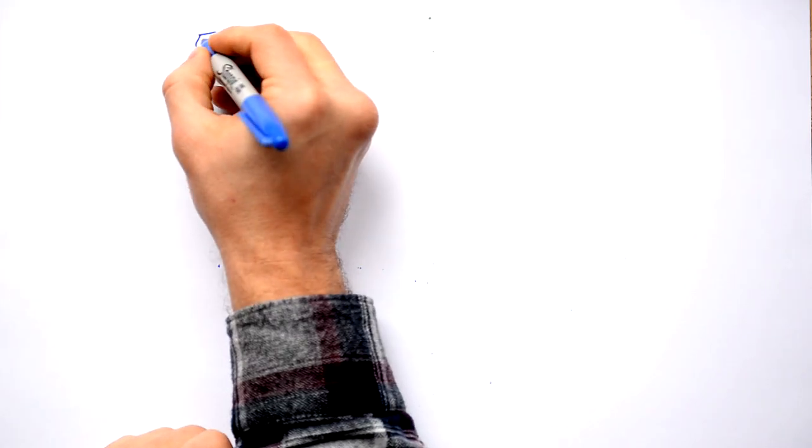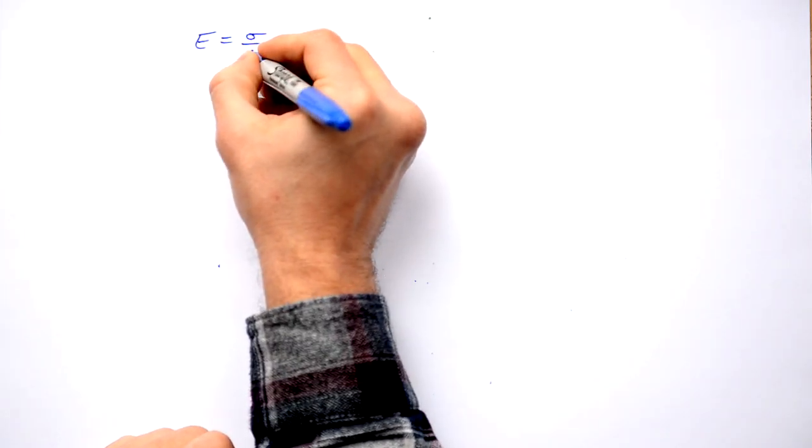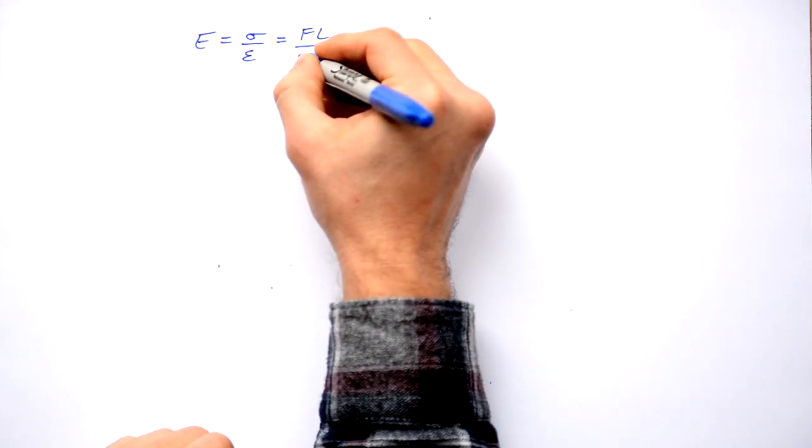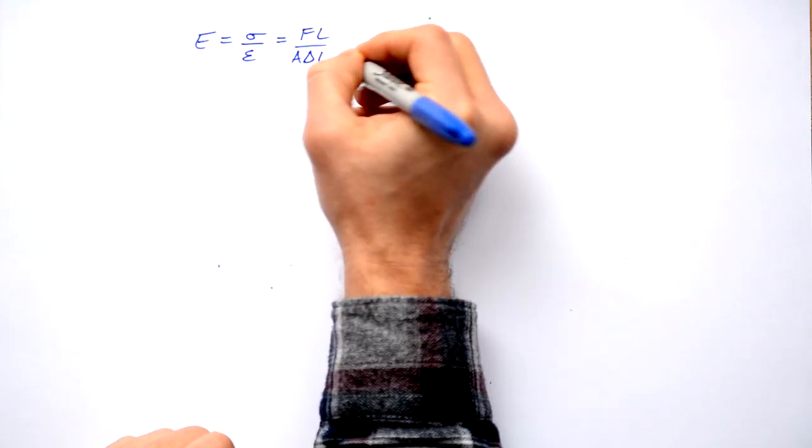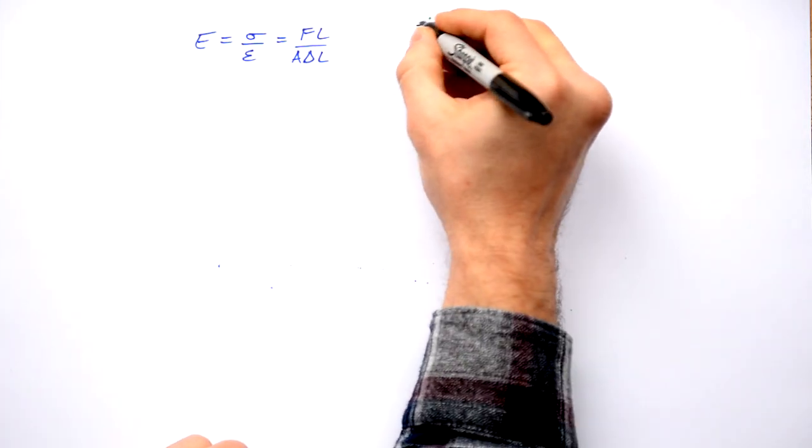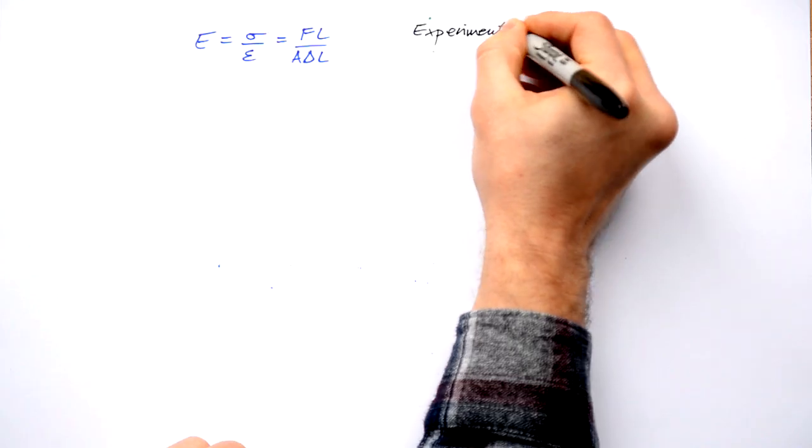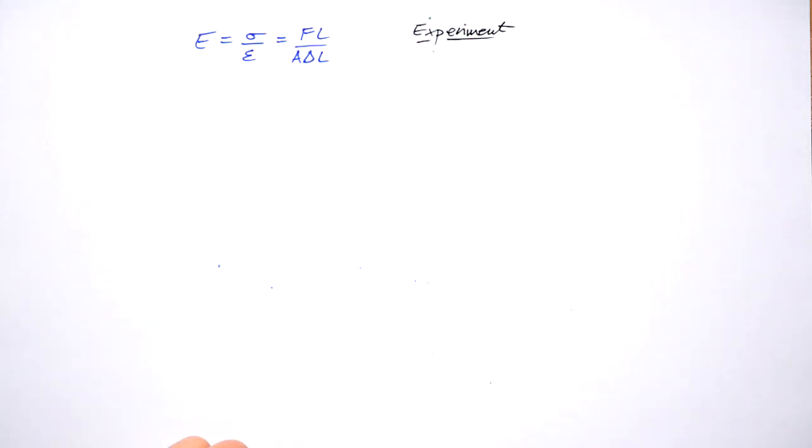So here's our equation again. Young's modulus equals stress over strain. And this equals to FL over A delta L. So in order to find out this value for a material, we can do an experiment. And this is actually a required practical.